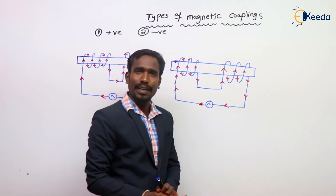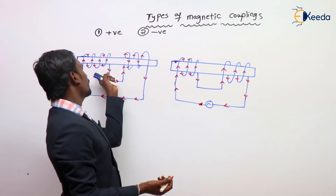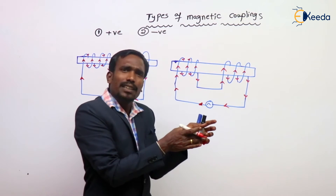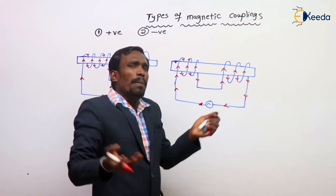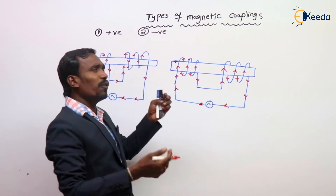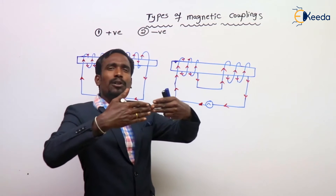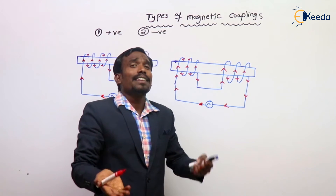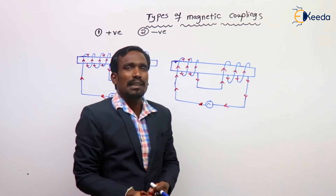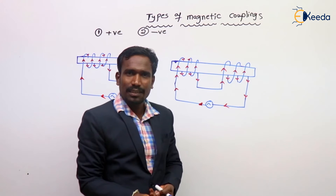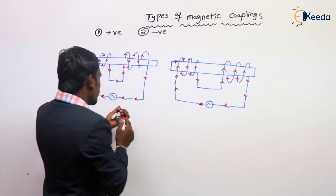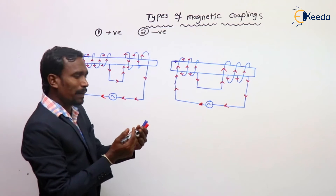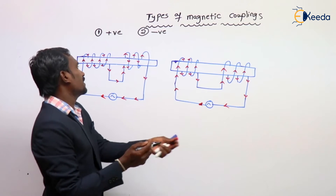If two fluxes are adding each other, that is positive magnetic coupling. If two fluxes are opposing each other, that is negative magnetic coupling. So let's see if this is positive or negative magnetic coupling.